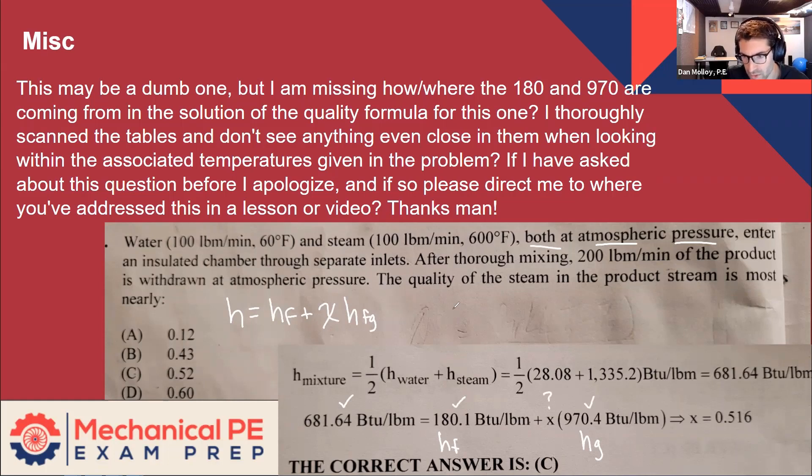Or a lot of times folks like to just go straight to the quality version of this. So you can say, let's say this was H3 because it's after the mixing, H3 minus HF over HFG, which is just doing the algebra on this to get the quality by itself.